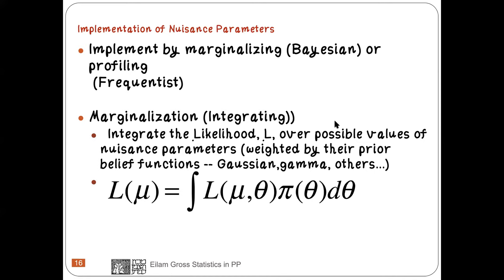There are two ways to take nuisance parameters into account. One is by integration — this is called marginalizing and it is a Bayesian way. The other is a frequentist way called profiling, and that is the one I want to talk about.